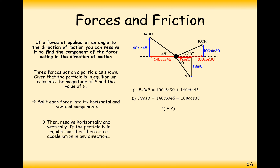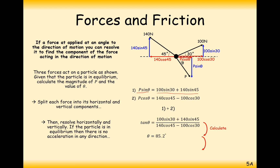We now have two simultaneous equations: P sin θ = (value) and P cos θ = (value). Dividing equation one by equation two, the P's cancel and sin/cos gives tan θ. Taking the inverse tan of the fraction gives θ = 85.2 degrees. Substituting back into either equation gives P = 150 newtons.